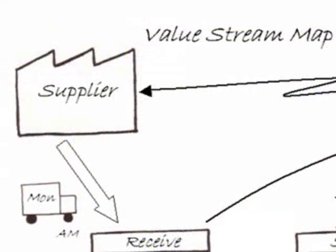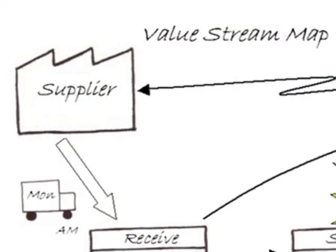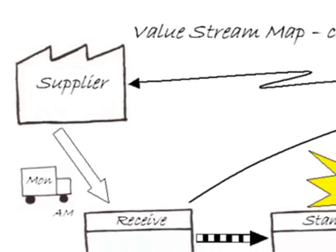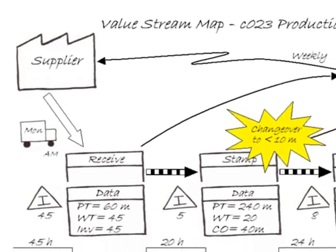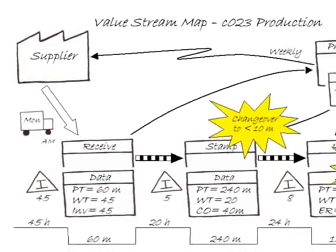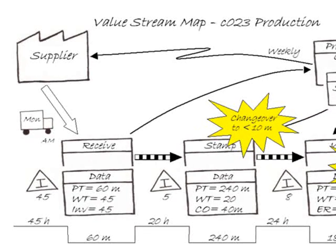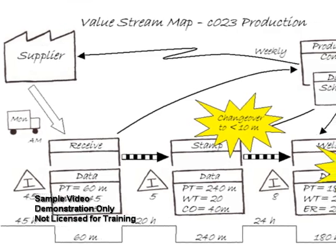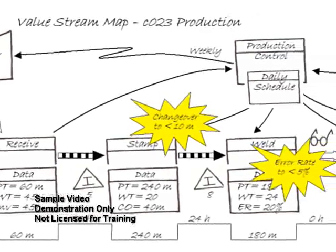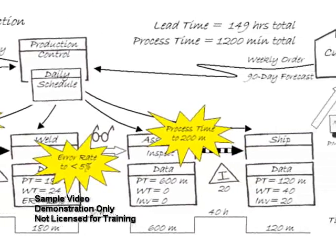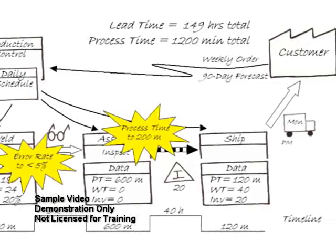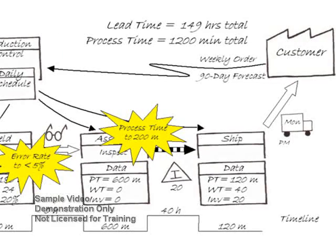A value stream map is a graphical representation of all the steps and processes required to service a client or to provide a product for a customer. A value stream map should represent the entire end-to-end process,